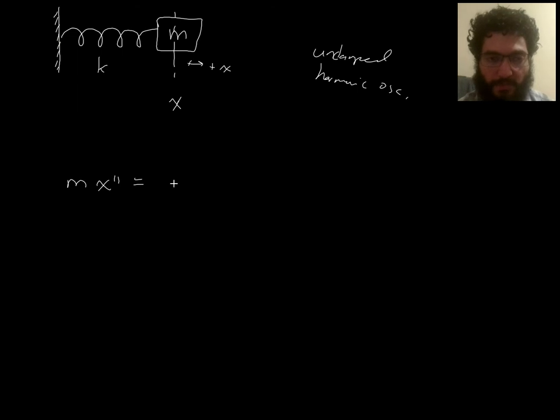Then the mass times acceleration is the total force, which is only coming from Hooke's law, so proportional to the displacement. Here, k would be the spring stiffness. And then we can rewrite this like this, to see that it's a linear, this is our standard form for a linear second order differential equation with constant coefficients.